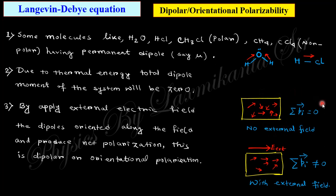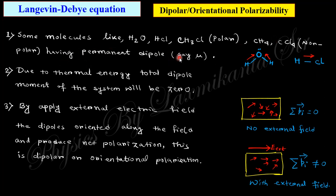With no external field, the dipoles are oriented such that the resultant dipole moment is zero. When we apply an external electric field, the positive and negative charges experience a force, the dipoles align, and finally the resultant dipole moment is not equal to zero. Examples like H₂O and HCl have permanent dipole moments. Due to thermal energy the resultant is zero, but when we apply the electric field it is not equal to zero.